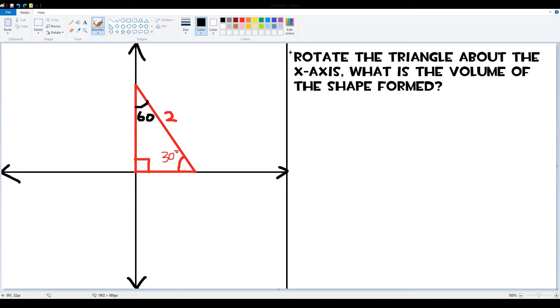So let me get to what it means when it says rotate the triangle about the x-axis. So x-axis is this horizontal one right there. And when it says rotate, basically it means fold this triangle down all the way.